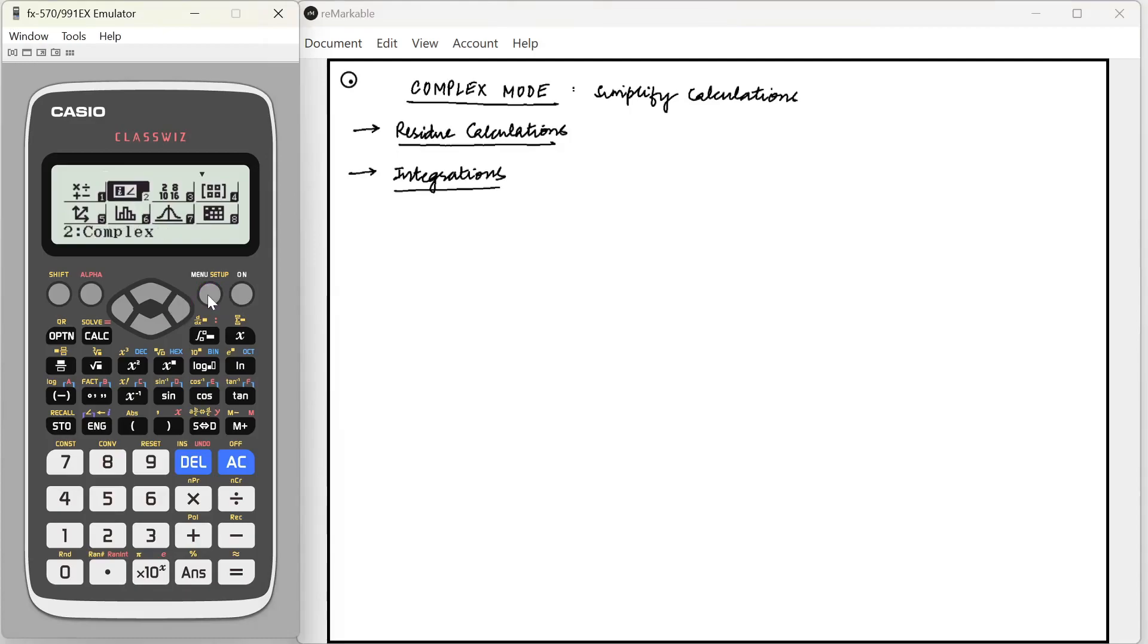So if you go to menu and go to the complex mode, then you can use this particular button to write i. So this is our i, and now we can make any calculations using i.